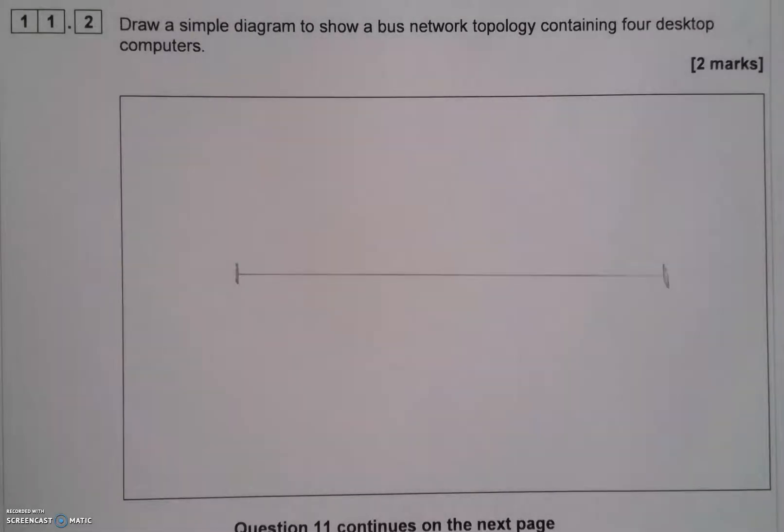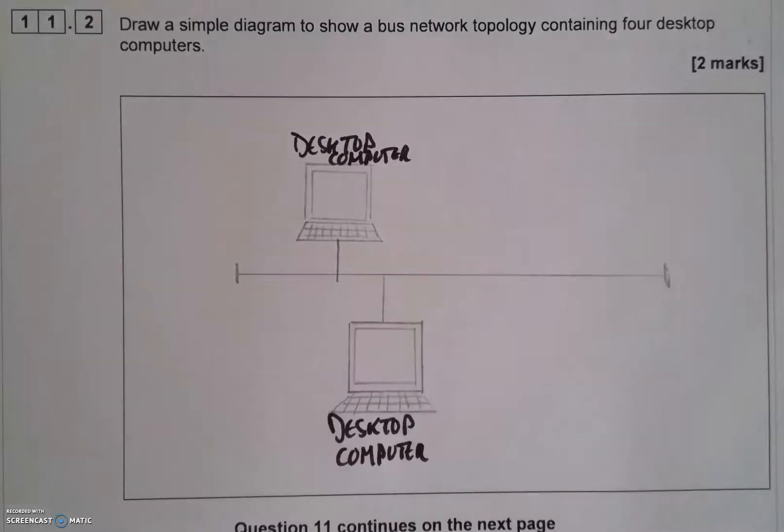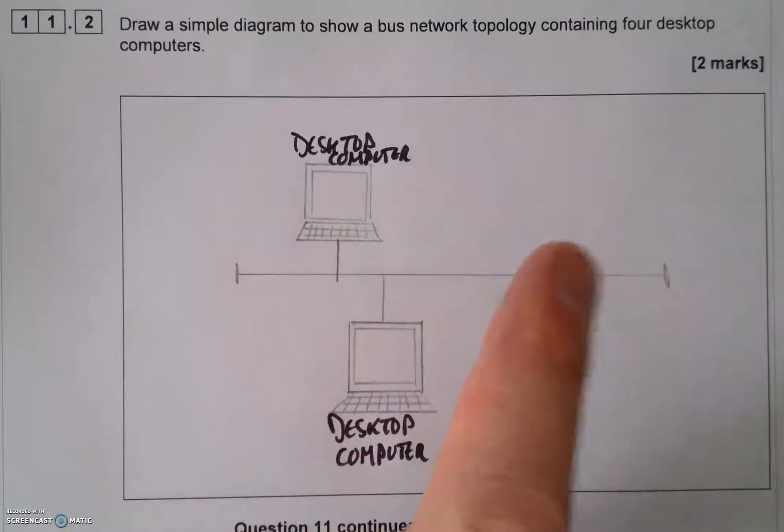Now that is the backbone of the bus topology and what I need to do now is connect all the four desktop computers I've been asked to connect to it. That's the first one, so one down three more to go. Now there's the second. Notice that I've staggered it so it's not directly underneath, I think it just looks better. I just need to do another couple now.